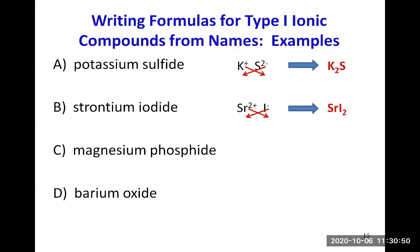Magnesium phosphide. Magnesium has symbol Mg, it's in group 2A, an alkaline earth metal, so it always makes a 2+ ion. Phosphide comes from phosphorus, group 5A, a non-metal. So you do 5 minus 8 to get the charge, which gives a 3 minus charge on the phosphide. Next, you do the crisscross trick: the 3 from the three negative charges on the phosphide becomes a subscript for magnesium, and the 2 from the two positive charges of magnesium becomes a subscript for phosphorus. So the formula is Mg₃P₂.